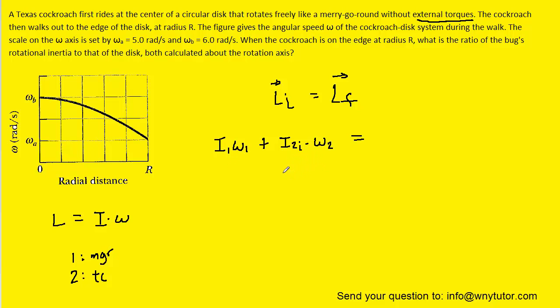Now, it's important to note from the graph that initially these objects are spinning at an angular speed of omega b. And the question notes that omega b is equal to 6 radians per second. So we can actually plug 6 in for the initial angular velocity of the merry-go-round as well as that of the cockroach.